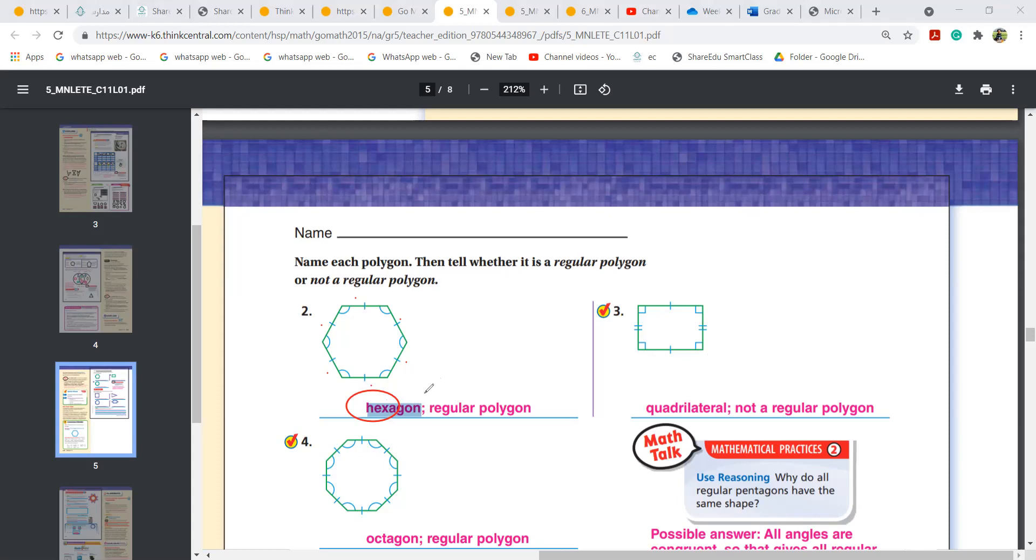And why do I call it as a regular polygon? If the sides and angles are equal. Now, here, four sides are called as quadrilateral. Quadrilateral. You have to know the name, girls, please. Quadrilateral.